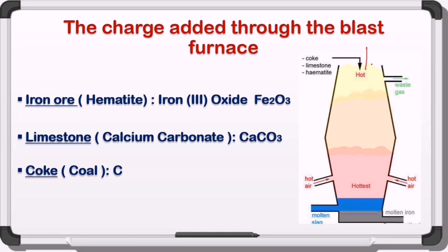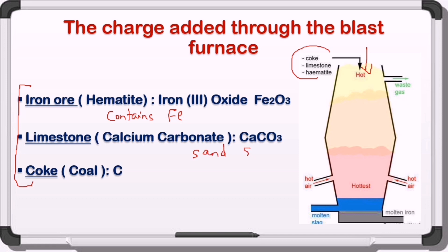Here we have the top of the furnace, where the raw material — or the charge — is added. The charge is a mixture of three raw materials. Number one, iron ore or hematite, iron(III) oxide, Fe₂O₃ — this is the source for iron. Number two, limestone or calcium carbonate — this raw material is used to get rid of the impurities. The basic impurity in the iron ore or hematite is sand, or silicon dioxide. So we use limestone to remove sand or silicon dioxide.